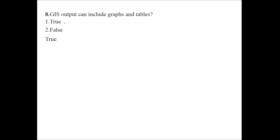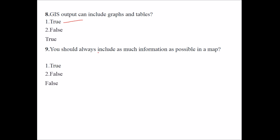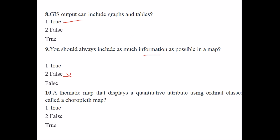GIS output can include graphs and tables — true. You should always include as much information as possible in a map — false, as requirements decide which information is placed on a map. A thematic map that displays a quantitative attribute using ordinal classes is called a choropleth map — true, as that is the definition of a choropleth map.